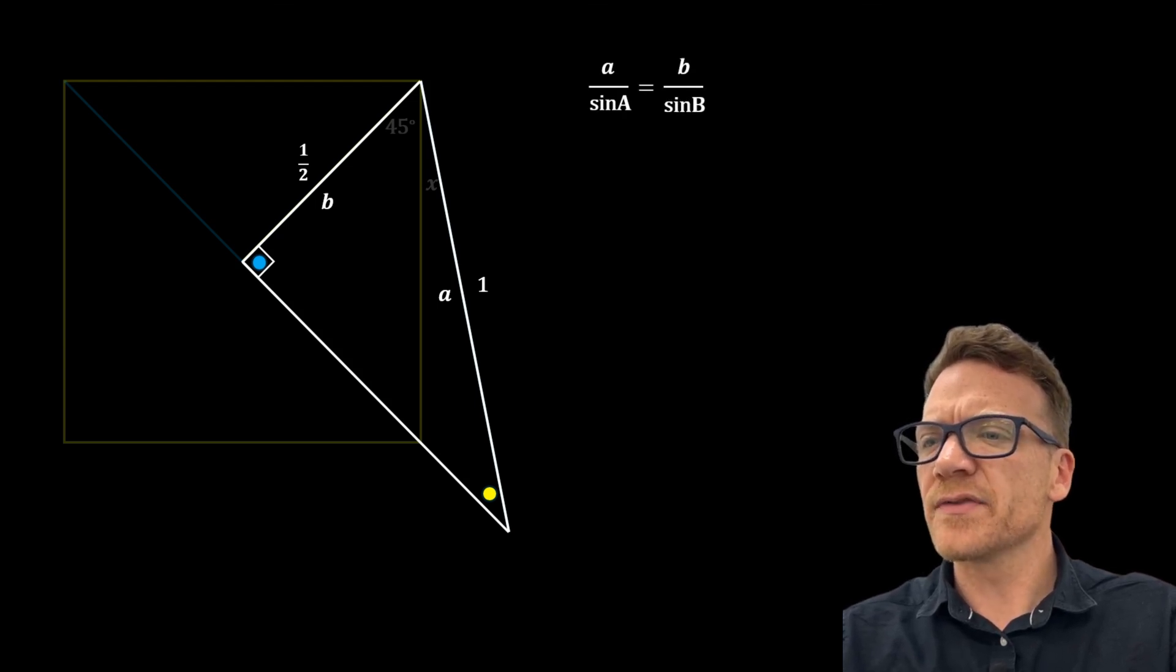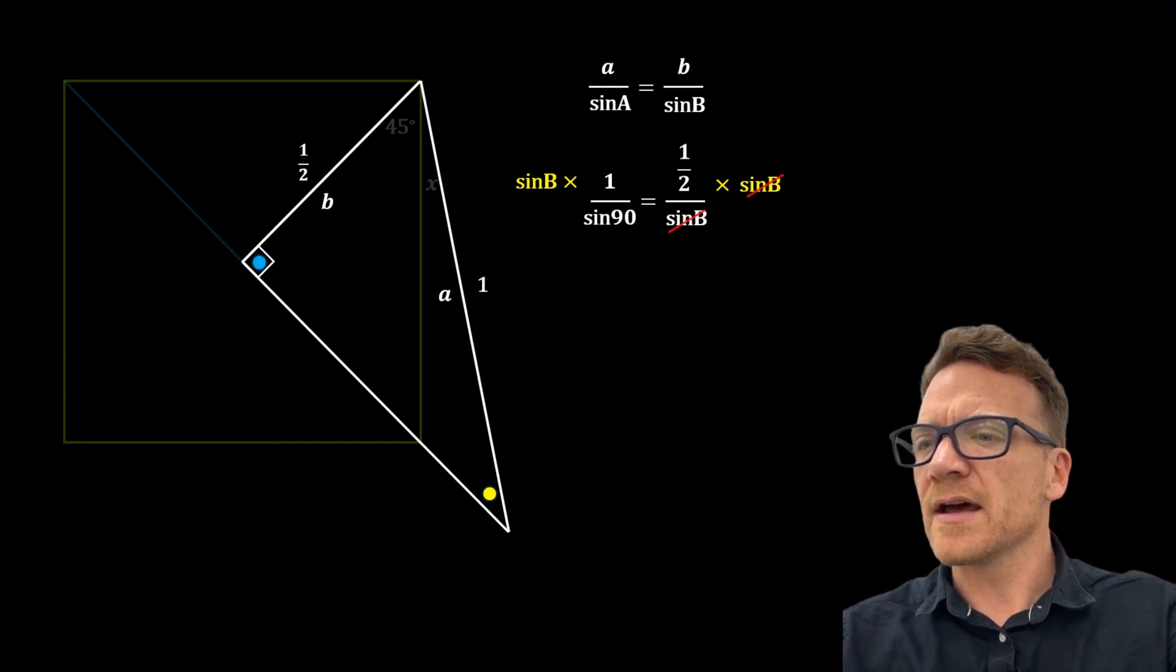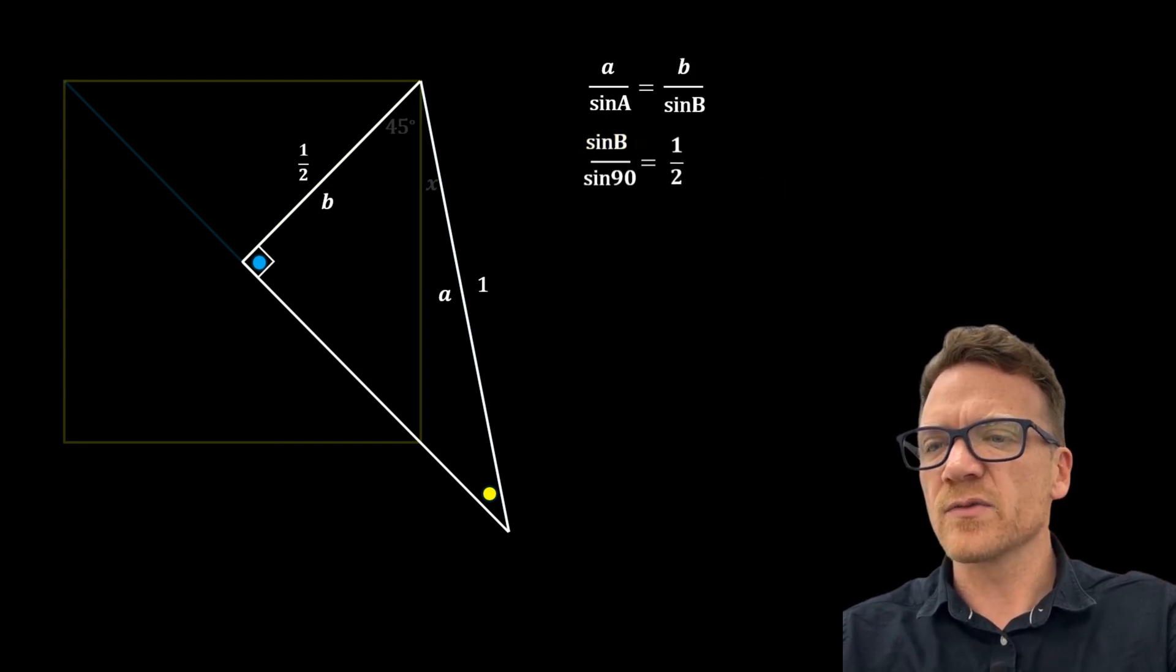We can substitute the side lengths and angles into the formula which gives us 1 over sine of 90 is equal to half over sine B. Multiply both sides by sine B and now both sides by sine 90 to leave us with sine B equals a half sine 90.